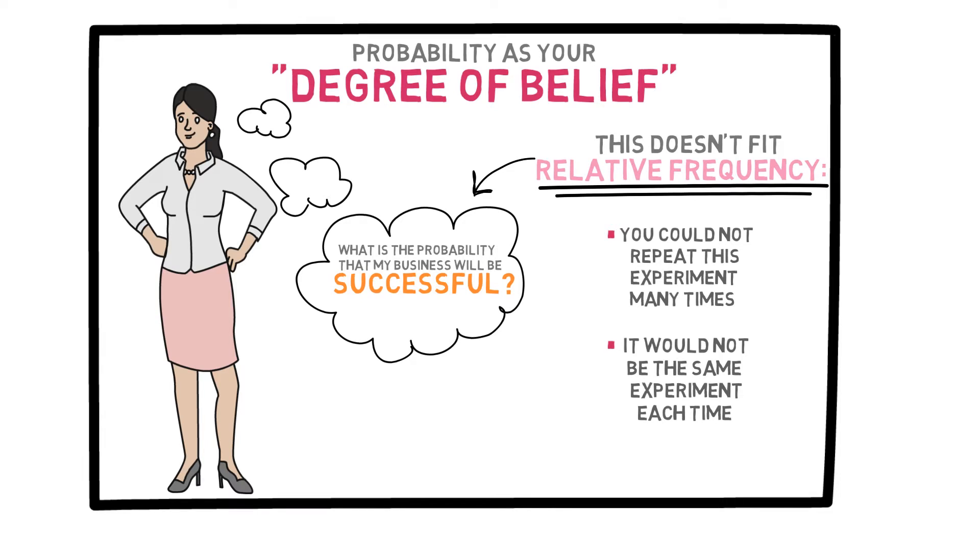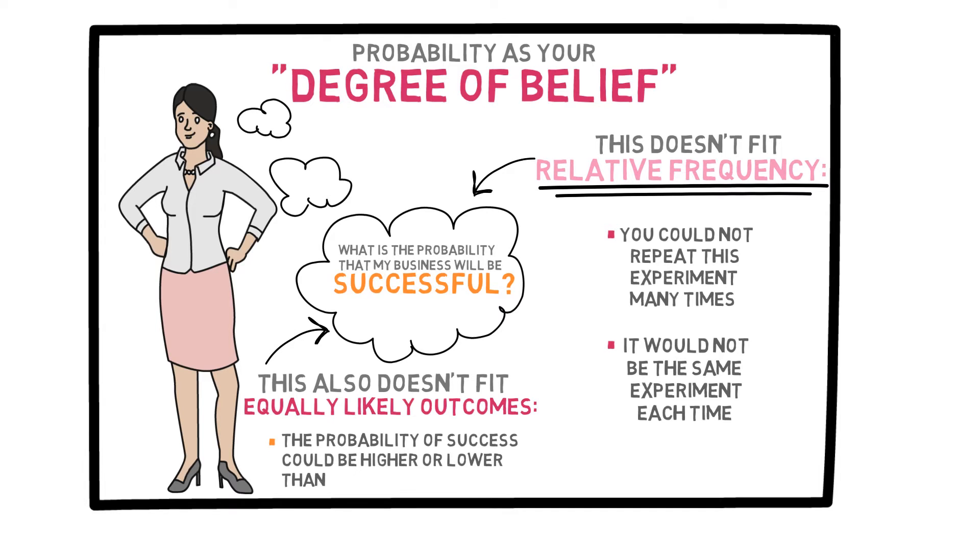This is why the concept of the relative frequency is not very useful here. Another approach to probabilities we have discussed is the concept of equally likely outcomes, such as in a coin toss. If you are starting a business, you have two possible outcomes, success and failure, but they are not necessarily equally likely. Depending on the circumstances, the probability of success could be much higher or much lower than the probability of failure.